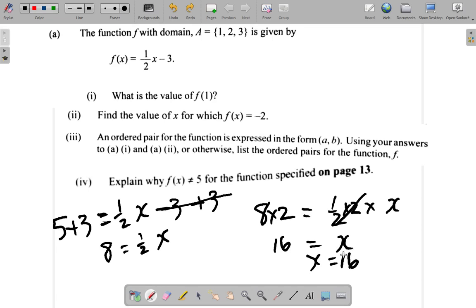Now, why would f of x not equal to 5 for the function specified? When I try f of x is equal to 5, I get out an x is equal to 16.